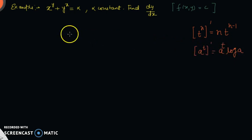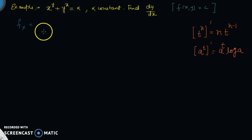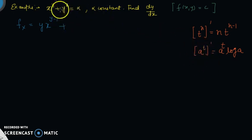Let us find f_x. Here x is variable and y is constant. For the term x^y, using the t^n formula where n is y (constant), the derivative is y·x^(y−1). For the second term y^x, y is constant like 'a' and x is variable, so using the a^t formula, the derivative is y^x·log(y). So f_x equals y·x^(y−1) plus y^x·log(y).